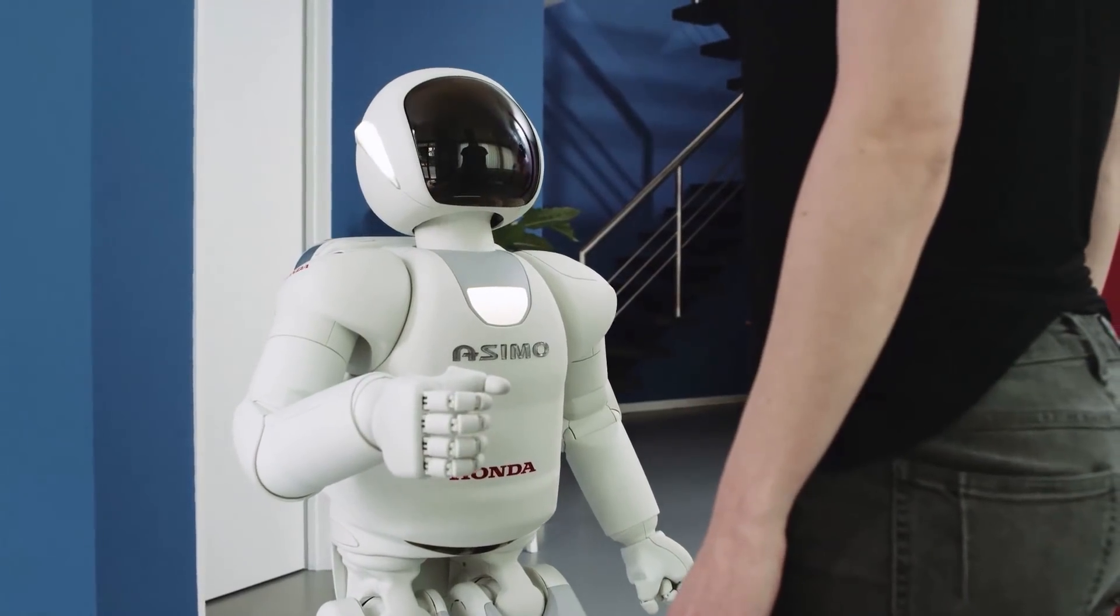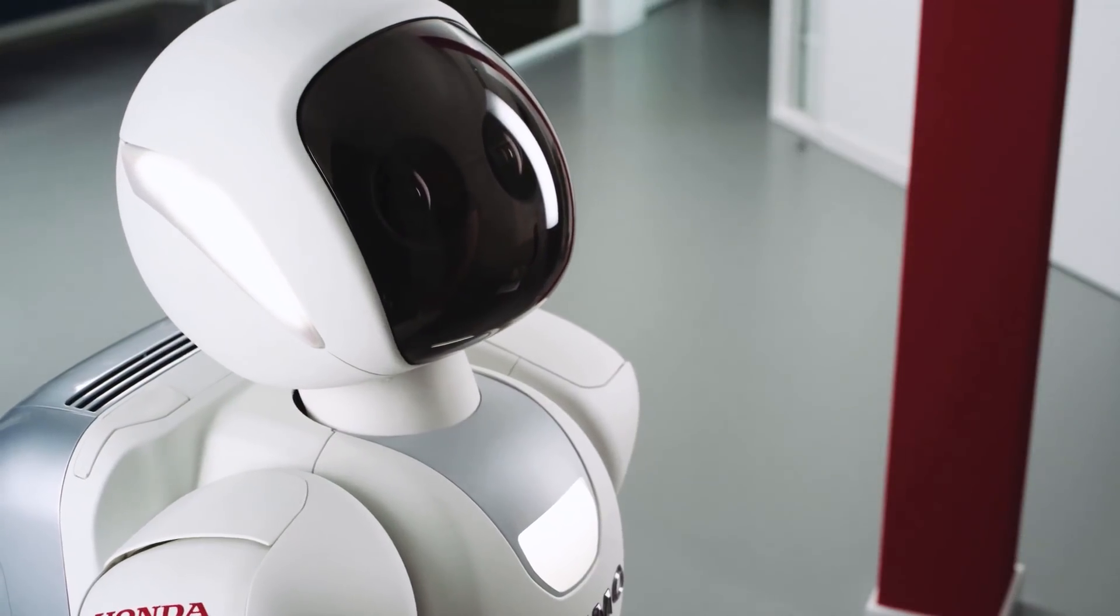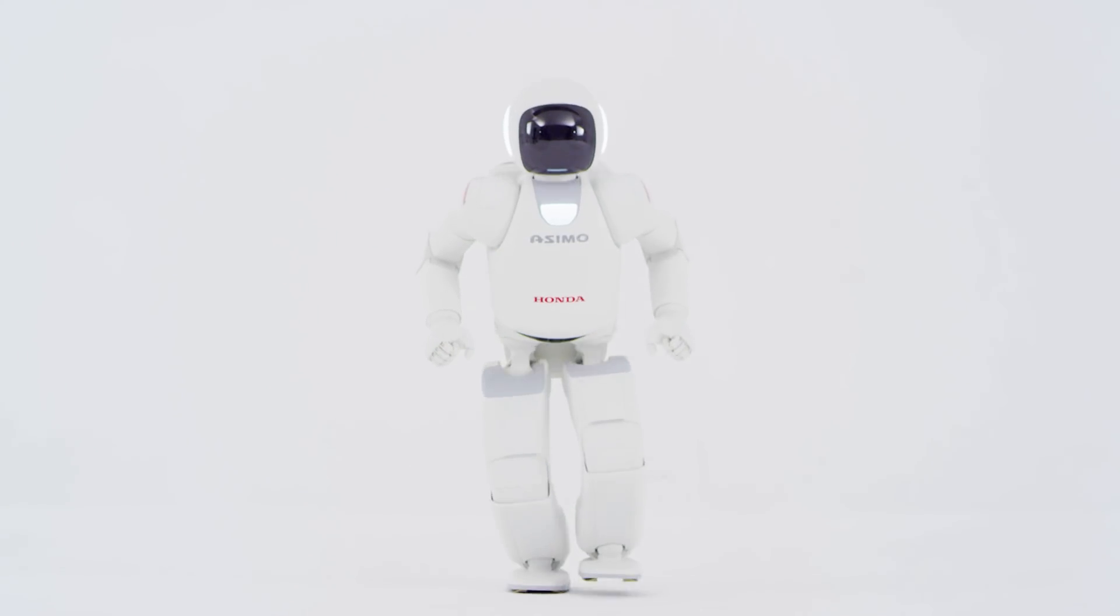But two legs provide a sense of familiarity that helps humans empathize with the machines. Teaching robots to walk used to involve a lot of trial and error. Robots like ASIMO took several years of research and engineering to stand and walk around.